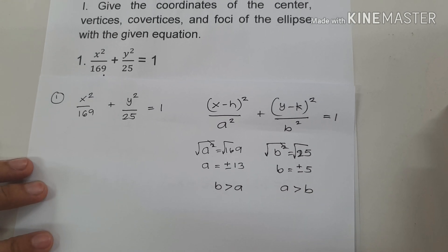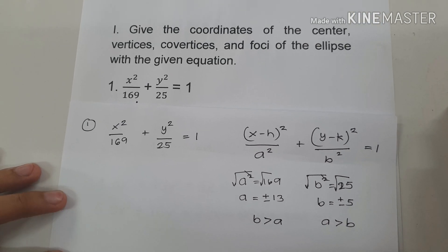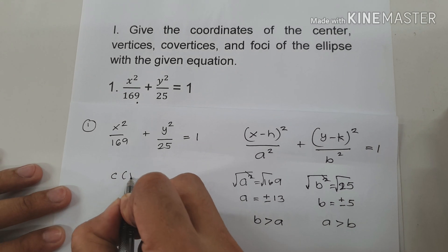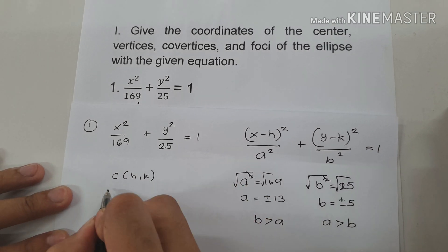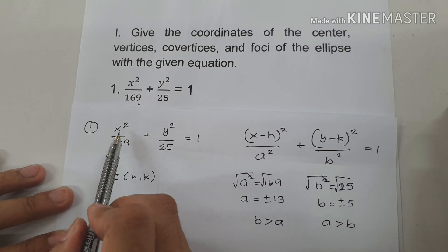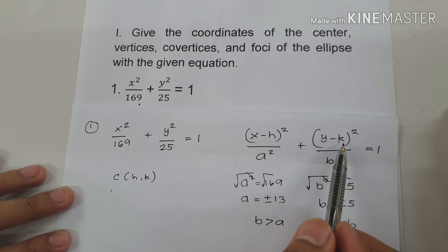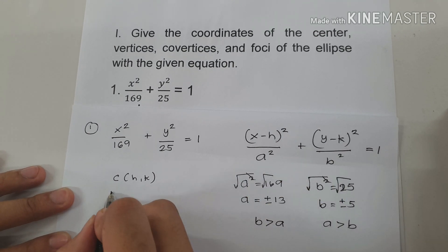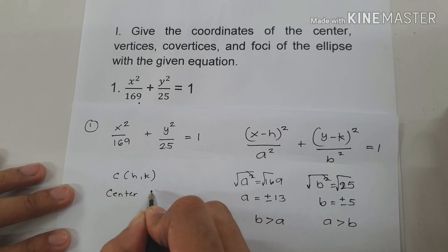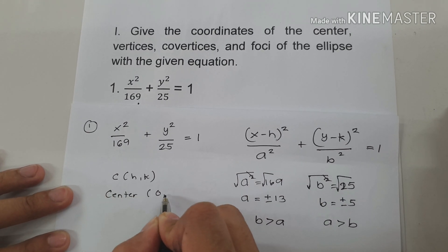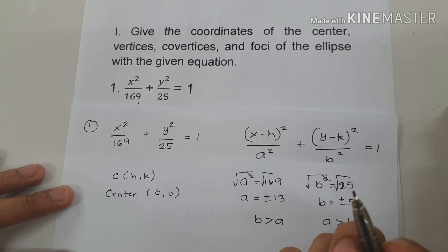Now let us find the coordinates of the center. The center is always (h, k). As you can see in our given, we don't have h and k, so therefore our center is (0, 0).